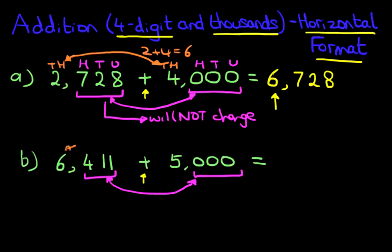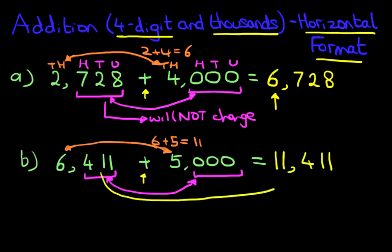How about the thousands? We've got 6 being added to 5. 6 plus 5 is 11. The answer is 11,411. Okay, the 411 over here has not changed. All we do is 6 plus 5.